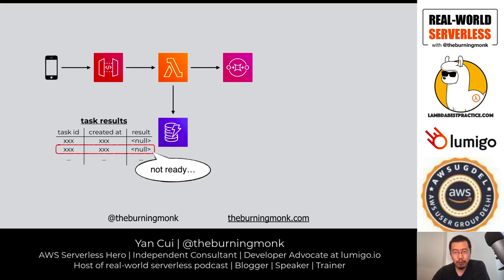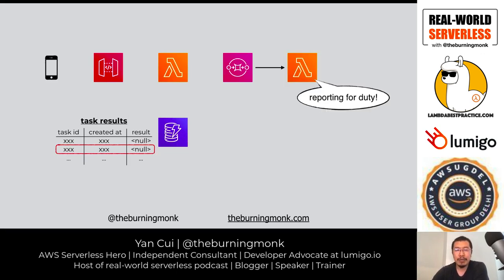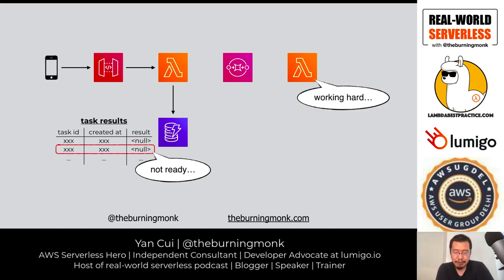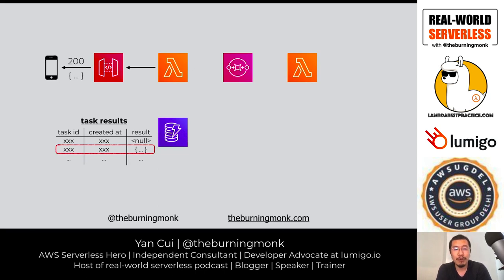Walking through the implementation: with API Gateway and Lambda, when a request comes in, you write metadata to a DynamoDB table — the request creation time, and current result as null — and put a message into an SQS queue. You respond to the caller with a 202 and a Location header. A background Lambda function processes the work and updates the DynamoDB record with the result. The next time the client polls, it sees the result is ready and gets a 200 OK with the actual response.